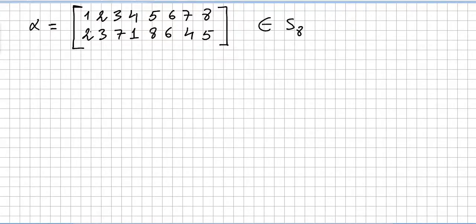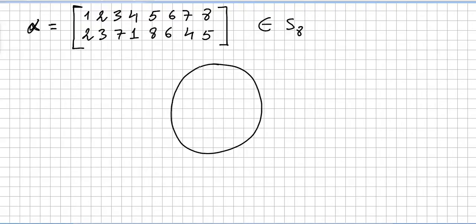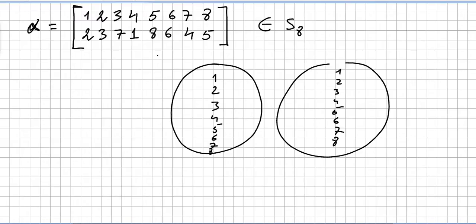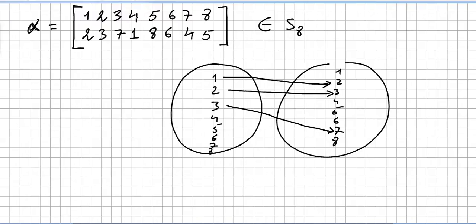Next question: consider the permutation alpha. It takes 1 to 2, 2 to 3, 3 to 7, 4 to 1 — so you have a bijection — and 5 goes to 8. Check the previous video for the notation for this sort of two-row permutation.